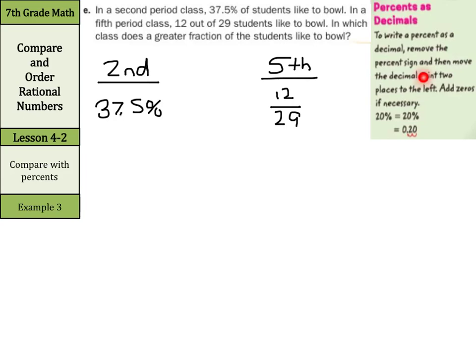To get this 37.5% into decimal form, we need to move our decimal point two spots to the left, which would be 0.375, and we remove the percentage sign.